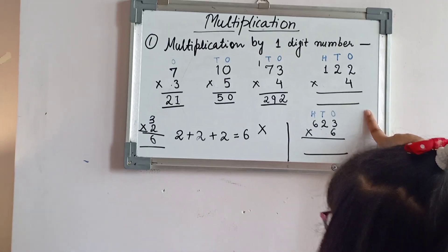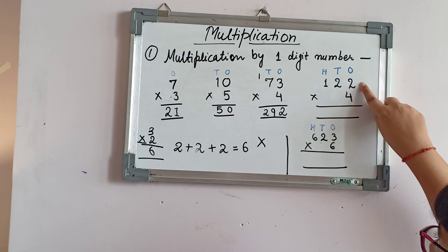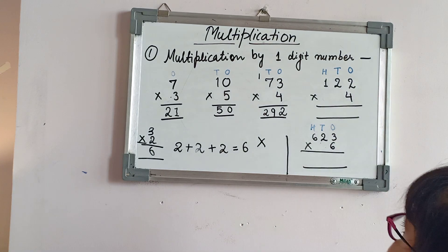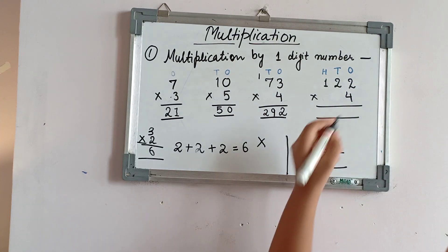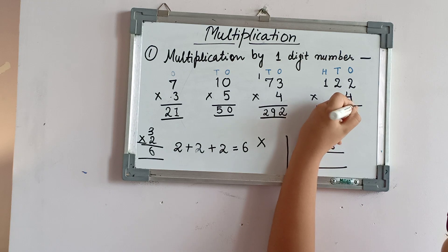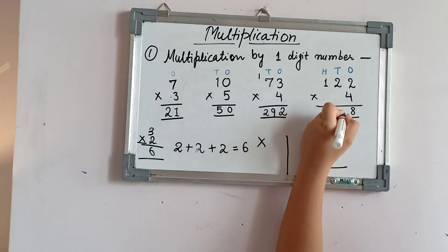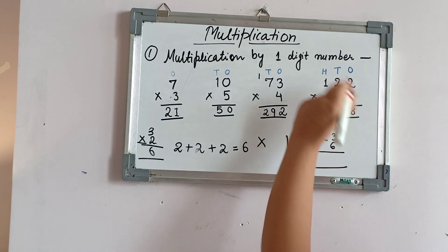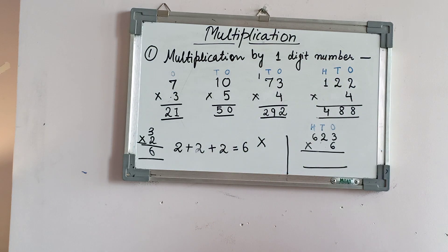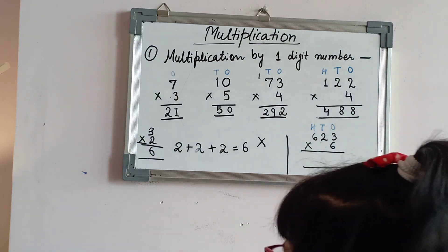Now let's go to the fourth question. This is with three different numbers. 4×1 is 4, 4×2 is 8 — so it will be 8. Then 4×1 is 4 and 4×2 is 8. And 4×1 is 4. This was without carry and it is very, very easy.